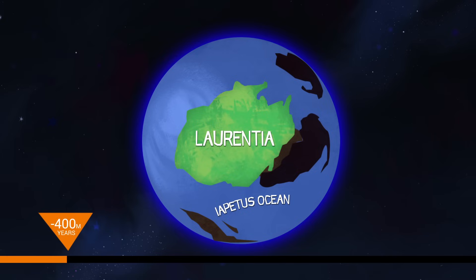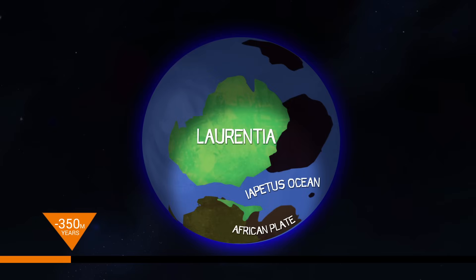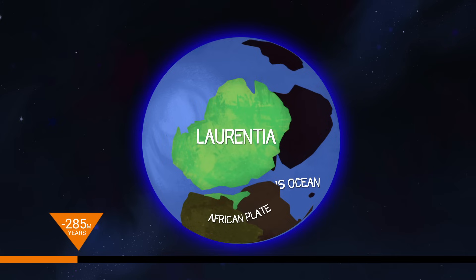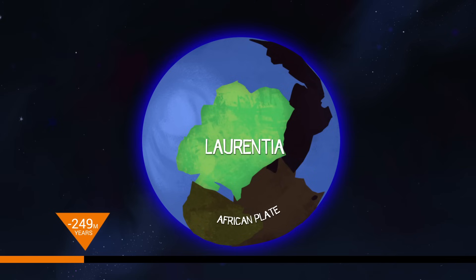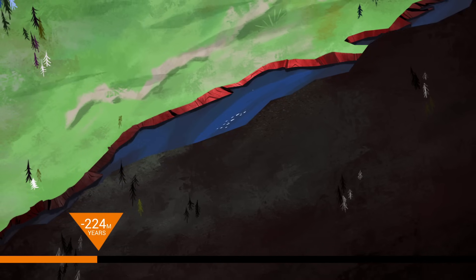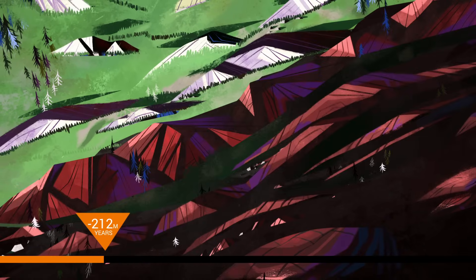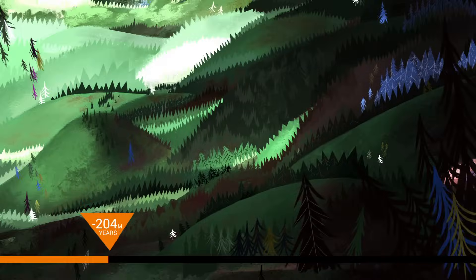We're now at 400 million years ago. Off today's east coast, the massive African plate inches westward, closing the ancient Iapetus Ocean. It finally collides with Laurentia at 250 million years to form another supercontinent, Pangaea. The immense pressure causes faulting and folding, stacking up rock to form the Appalachian Mountains.